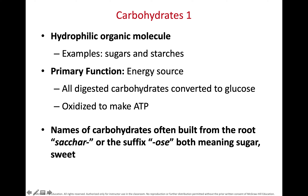All carbohydrates, whether complex or simple, will eventually get broken down and turned into glucose. We take that glucose and oxidize it to make ATP, the energy currency of the cell. As we look at carbohydrates, there are some root words that help us recognize a sugar.